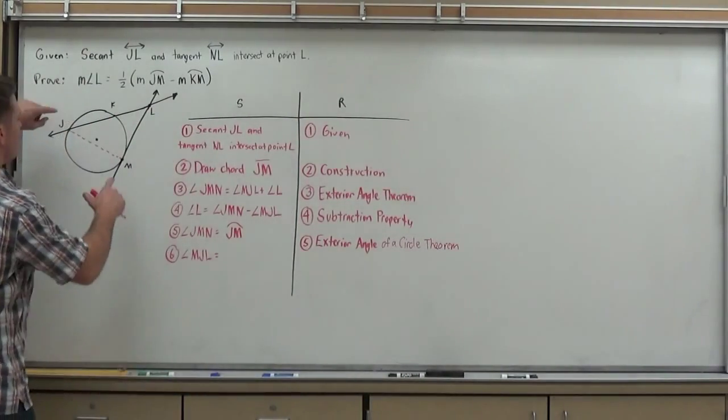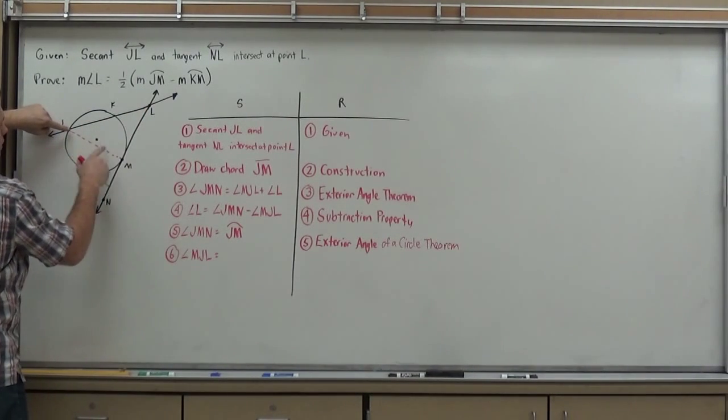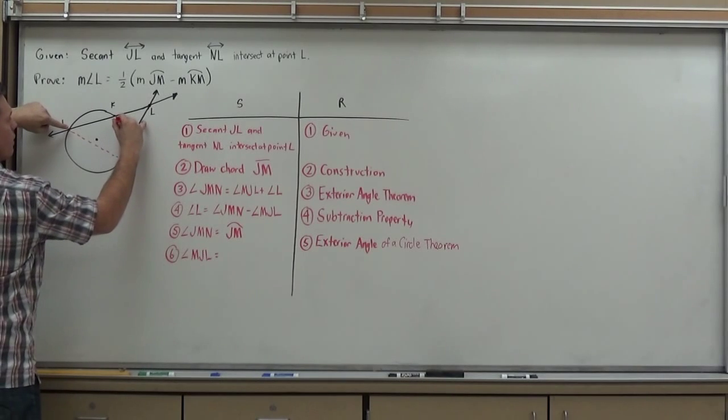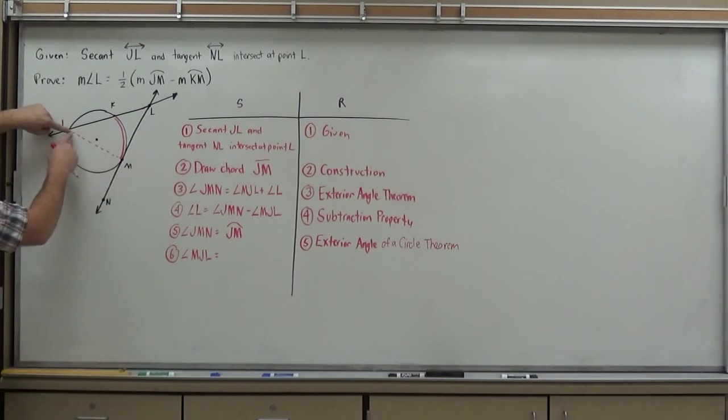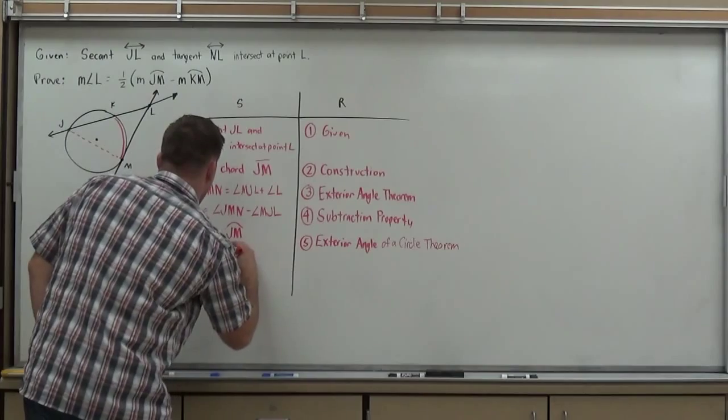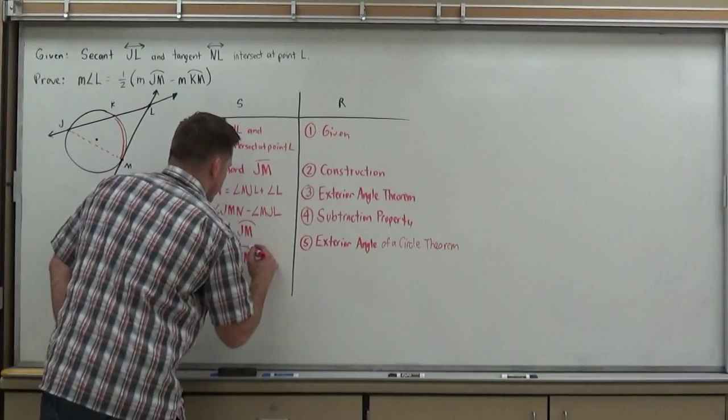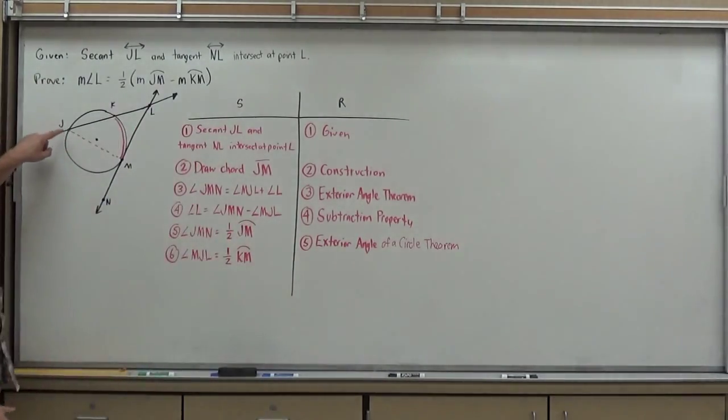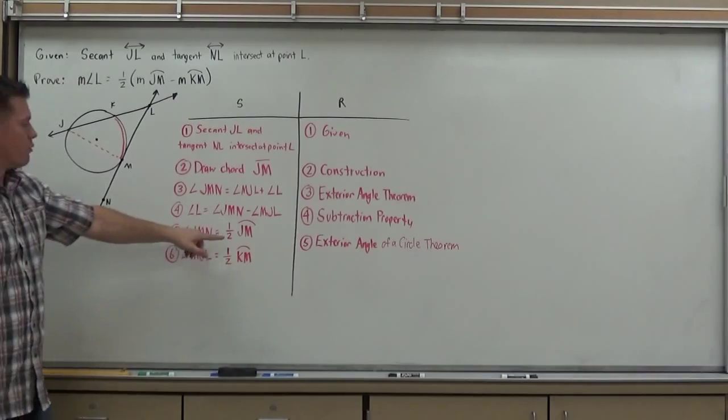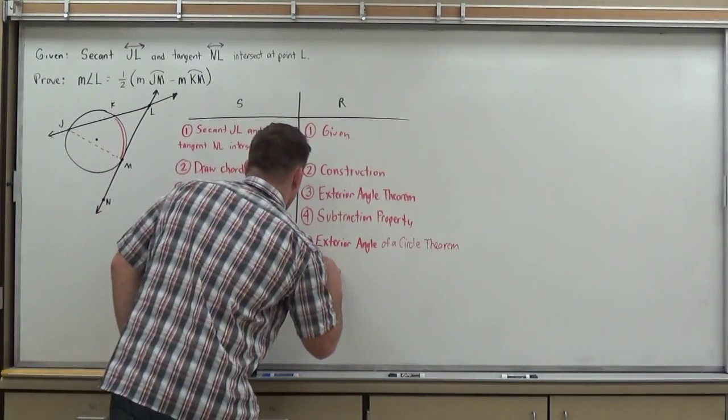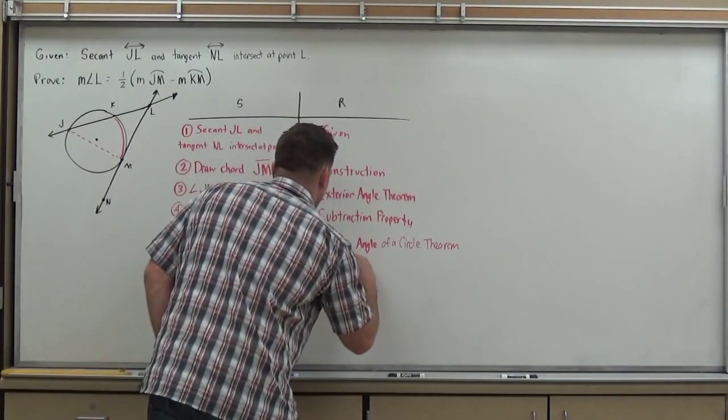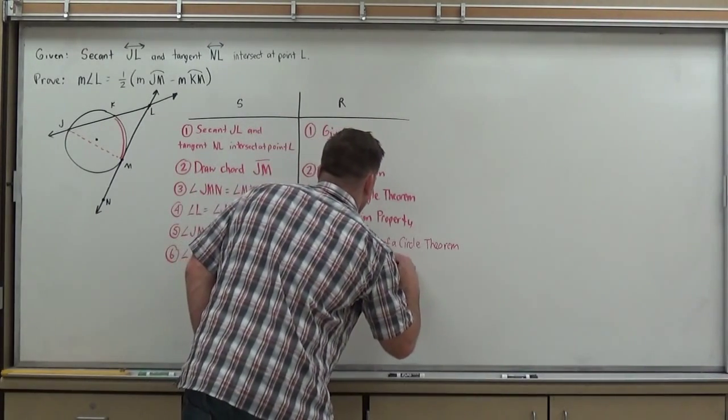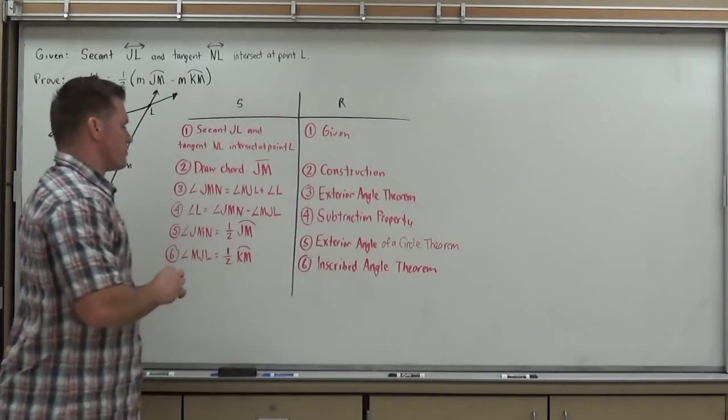Now, angle MJL actually forms an arc here, arc KN. And that is an inscribed angle, because it's not made from the central, and we know inscribed angles are half their arc measure. So, I can say angle MJL is one half arc KN. Oh, and one half arc JN. I'm sorry, when I talk about the exterior angle of a circle theorem, the exterior angle is actually one half the arc. So, this should be one half arc JN, one half arc KN. My reason, inscribed angle theorem. And that states that it's half the measure of the arc it makes. Inscribed angle theorem.